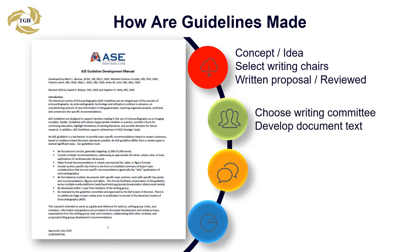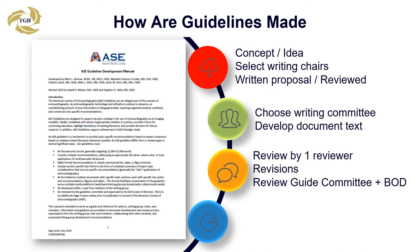A key component of the process is the selection of the writing committee, which is based on very specific criteria to reflect a multidisciplinary, geographic, experiential, and gender composition. Meetings occur, committee members write drafts edited by the co-chairs, and a final draft is submitted for review by a single reviewer. After further iterations, the document is submitted for review by the guideline committee and board of directors, then approved and submitted to JASE. A typical timeline for this type of project is roughly one to two years.